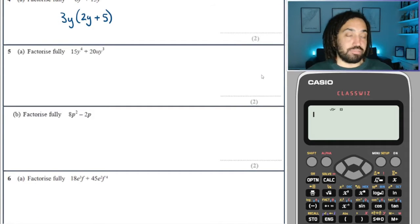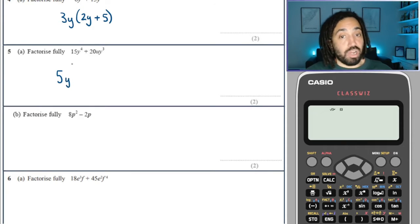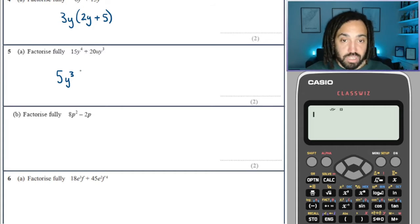Okay, what have we got here? Five is the highest common factor. Y, but not just Y, not even Y squared, but actually Y cubed can come out. But not Y to the four because the term on the right does not have a Y to the four.